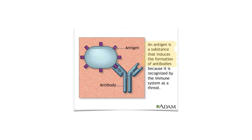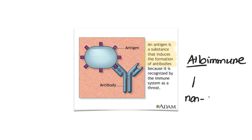With hemolytic disease of the newborn, we're talking about a specific type of hemolytic anemia known as alloimmune hemolytic anemia. The prefix 'allo' refers to non-self antigens, and so in this case we're talking about a foreign antigen that will result in the production of antibodies.